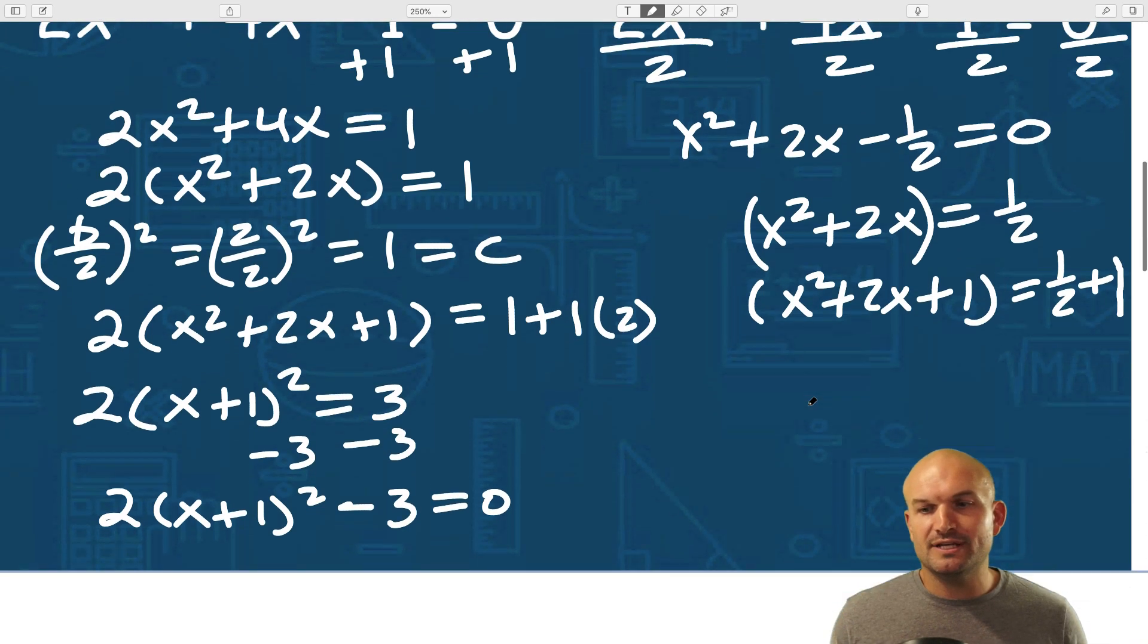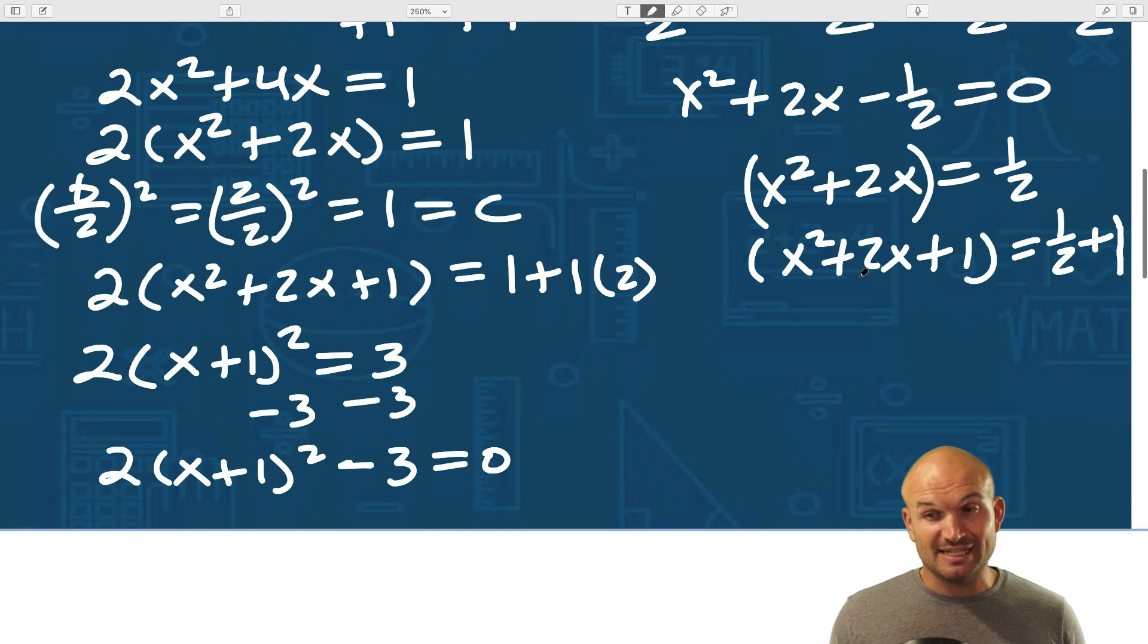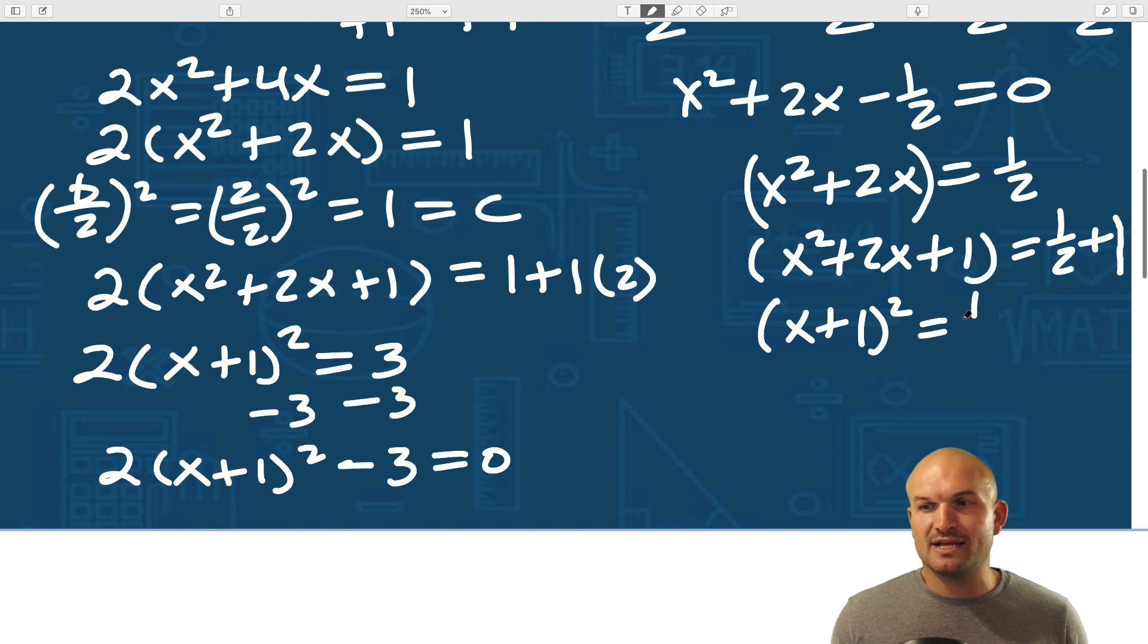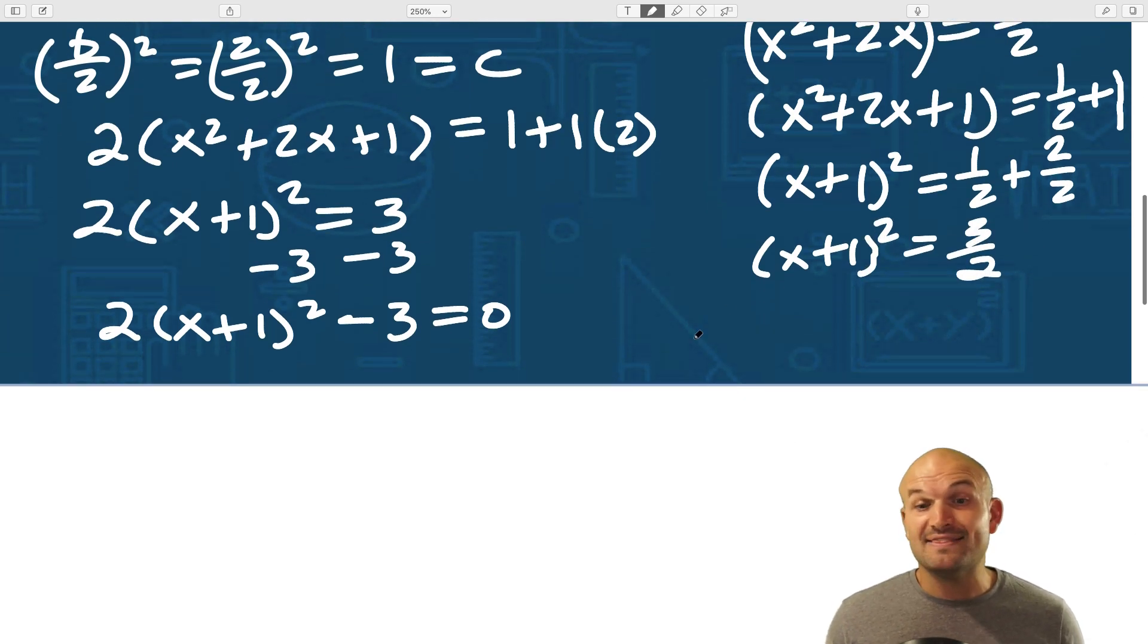So hopefully you guys can see that all I simply need to do in this case is now I can rewrite that as an (x + 1)². And then I can rewrite this as one half. I can change the one to two over two. And therefore, I have an equation (x + 1)² = 3/2.